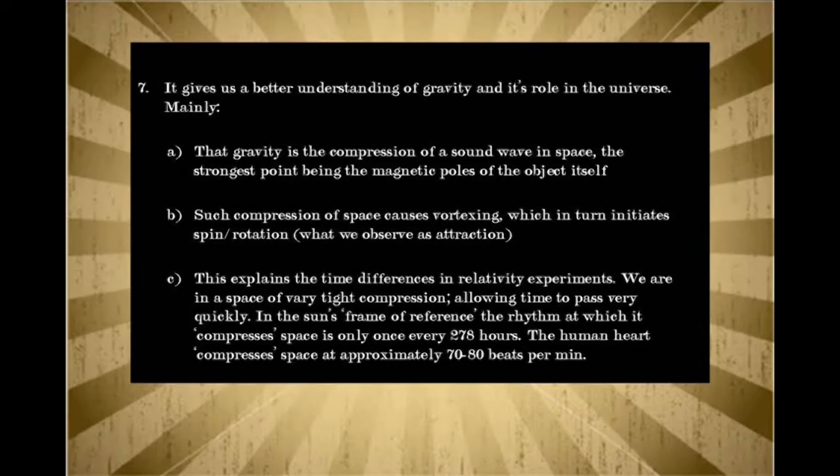Such compression of space causes vortexing, which in turn initiates spin and rotation. And this is what we observe as attraction of objects towards each other. They get into this vortex. On the quantum level, this thing is spinning around really fast. But on our level, this speed only appears to be going this speed. This is exactly how a tornado works. That's exactly how gravity causes compression. It's called spin. When you get into the influence of these parts of spin, something is attracted quickly, things are attracted more slowly, but they're all attracted in harmony with everything else.